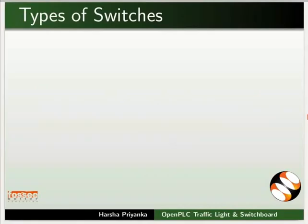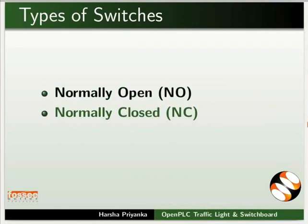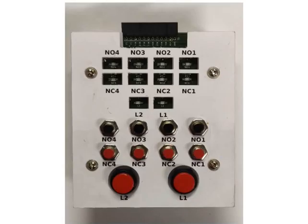In this switchboard module, there are 3 kinds of switches available: normally open, normally closed, and latched action switches. Normally open is represented as NO, normally closed is represented as NC, and latched action switches are represented as L. We will now look at their arrangement on the module from bottom to top.